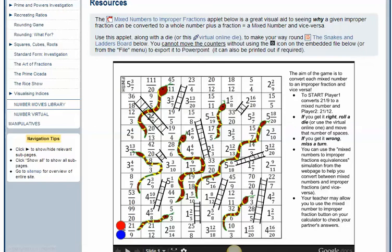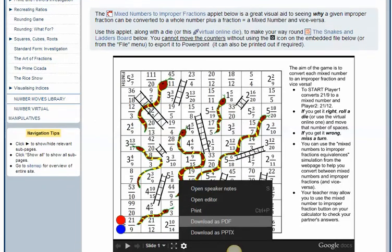We're going to have to export this to PowerPoint, so if you go down to this cog which is called options, we can download that as a PowerPoint. Then you can move these two counters, which you can't otherwise.